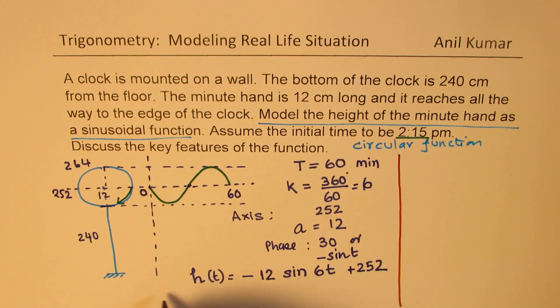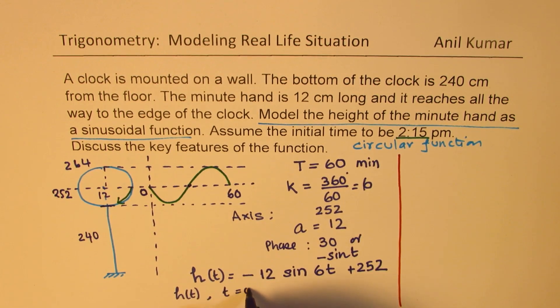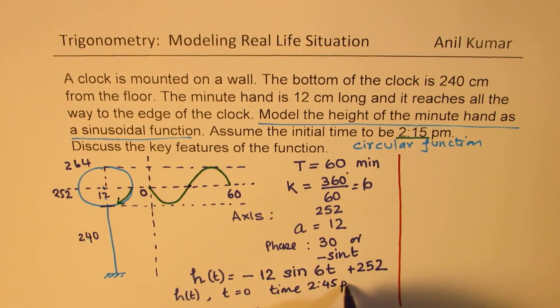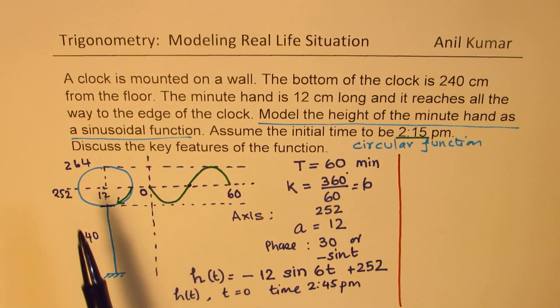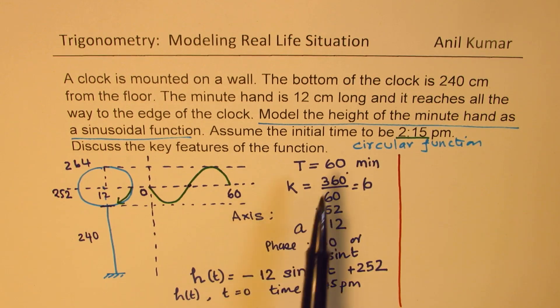Here, h(t) is height where t equals 0 corresponds to time 2:45 p.m. That's kind of tricky. So, we have started not at 12. We have started at 2:45 p.m. So, then we get all the scenario.